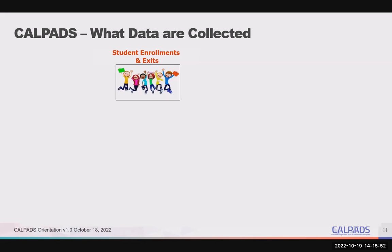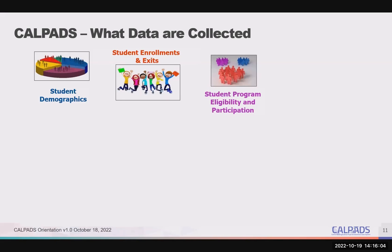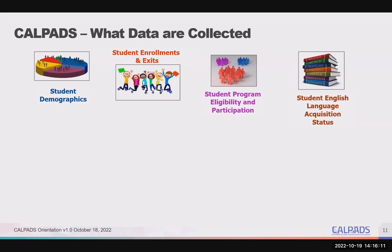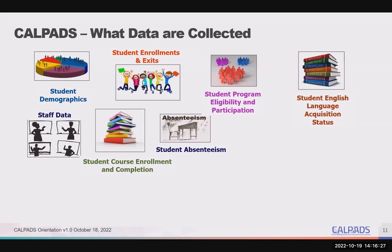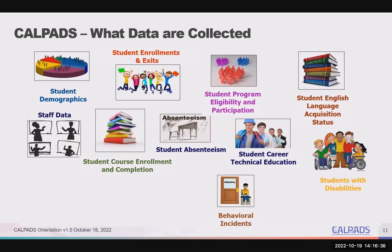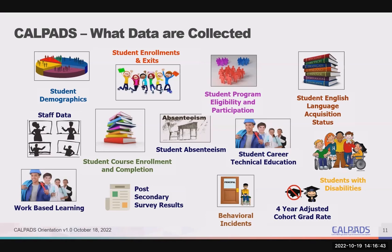Here is a quick view of all the data collected in CALPADS. Anytime a student enrolls or exits a California K-12 public school, that information must be reported in CALPADS, along with demographics, programs that students are eligible for and participate in, and their English language acquisition status. During specific times of the year, additional information is reported, including course enrollment and completion, staff teaching those courses and other certificated staff, student absence summary, behavioral incidents, career tech ed participants and completers, students with disabilities, graduates and other completers, work-based learning, and post-secondary survey results for CTE and students with disabilities.